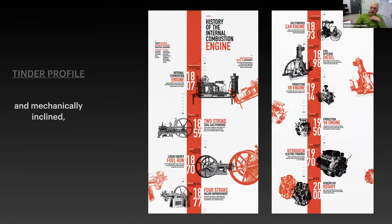Mechanically inclined, of course. This particular graphic is actually a timeline — very, very tall and vertical. It's basically the history of the internal combustion engine from 1807 to basically 2000, all the way to the modern rotary engine. It's a very cool two-color-only representation of a historic timeline.